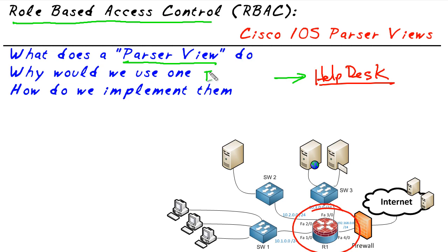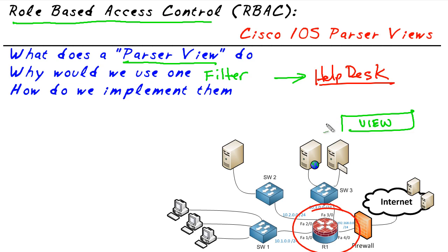A parser view — think of a view as a filter. Let's say somebody who logs in with full access can do anything they want to the router. However, if somebody logs in or connects and is associated with a view, that view can say this user can only do this, that, and the other, and anything limited by the view will be the only thing that user can do — they won't have full access. A parser view is a filter that specifies exactly what commands can be done.